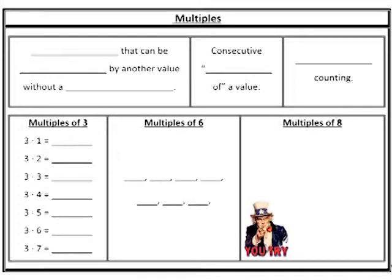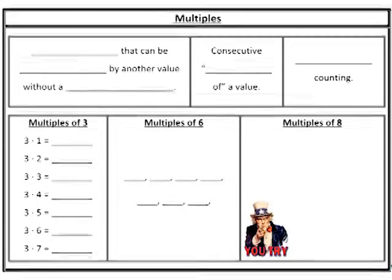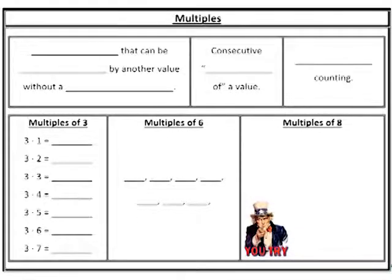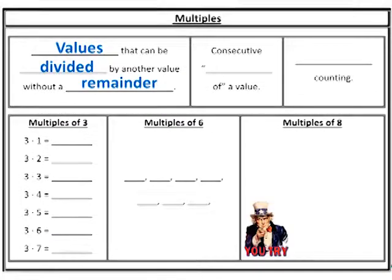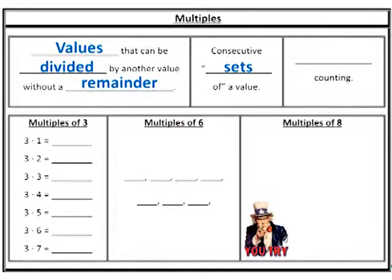Before we can move any further and talk about what happens when we have unlike fractions, we need to talk in terms of multiples. There are a couple ways to think about what a multiple is. You can think of them as values that can be divided by another value without a remainder. Another way to think about this — going back to the multiplication aspect — is consecutive sets of values: one set of three, two sets of three, three sets of three, four sets of three. This goes way back to skip counting.